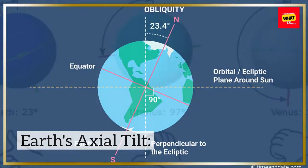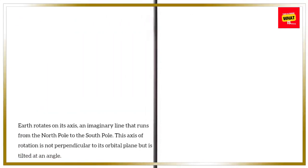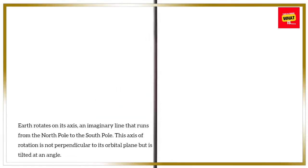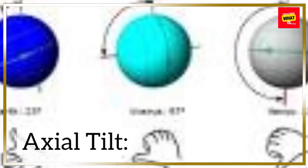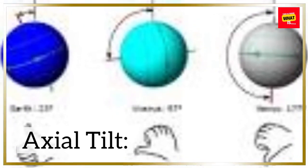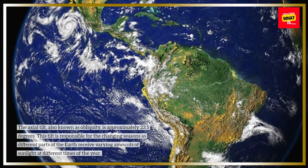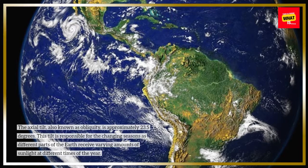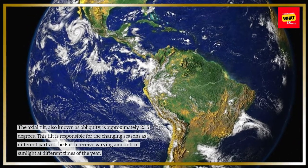Earth's axial tilt — Axis of Rotation. Earth rotates on its axis, an imaginary line that runs from the North Pole to the South Pole. This axis of rotation is not perpendicular to its orbital plane but is tilted at an angle. The axial tilt, also known as obliquity, is approximately 23.5 degrees. This tilt is responsible for the changing seasons, as different parts of the Earth receive varying amounts of sunlight at different times of the year.